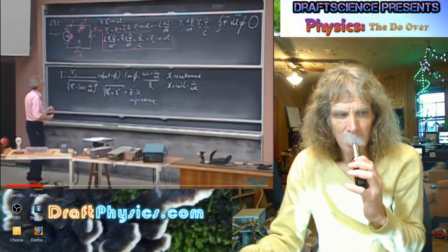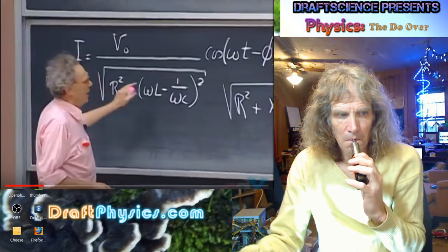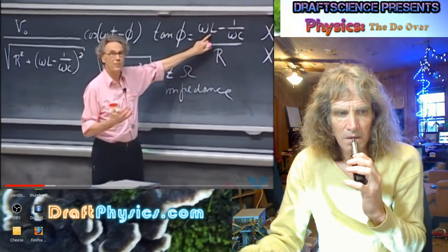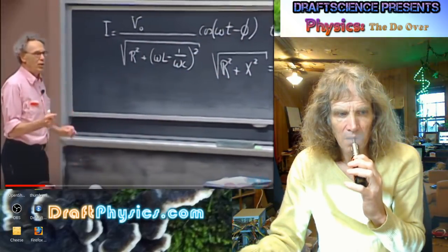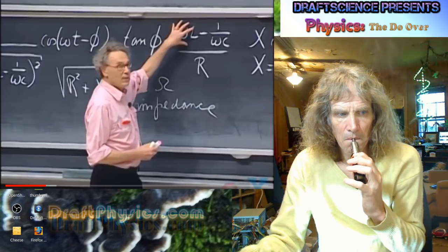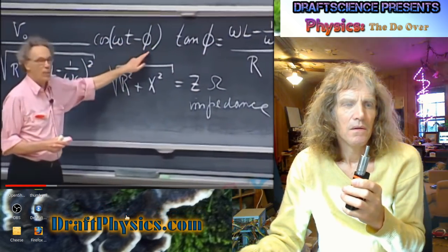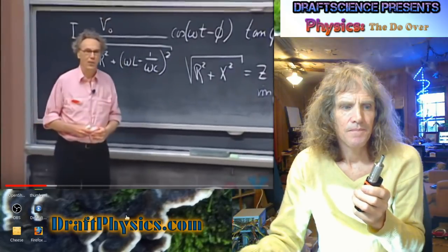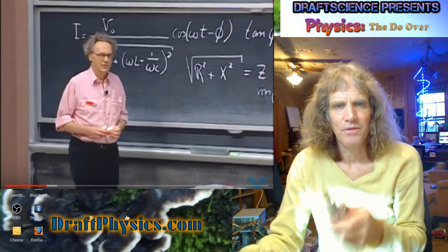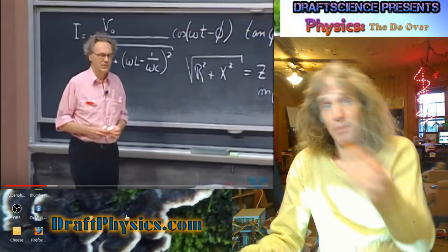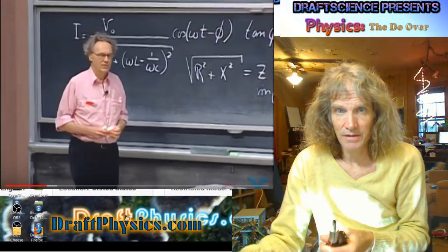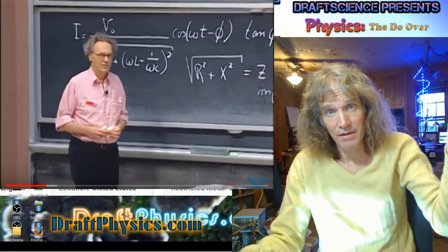You can see that the current can be delayed relative to the driving voltage when φ is positive — the current comes later than the voltage. That's the result of the inductor. But it's also possible that the current leads the voltage, which is very hard to understand intuitively. That is the case when the capacitor term dominates over the inductor term — then φ becomes negative, and so minus φ becomes positive, meaning the current is leading the voltage.